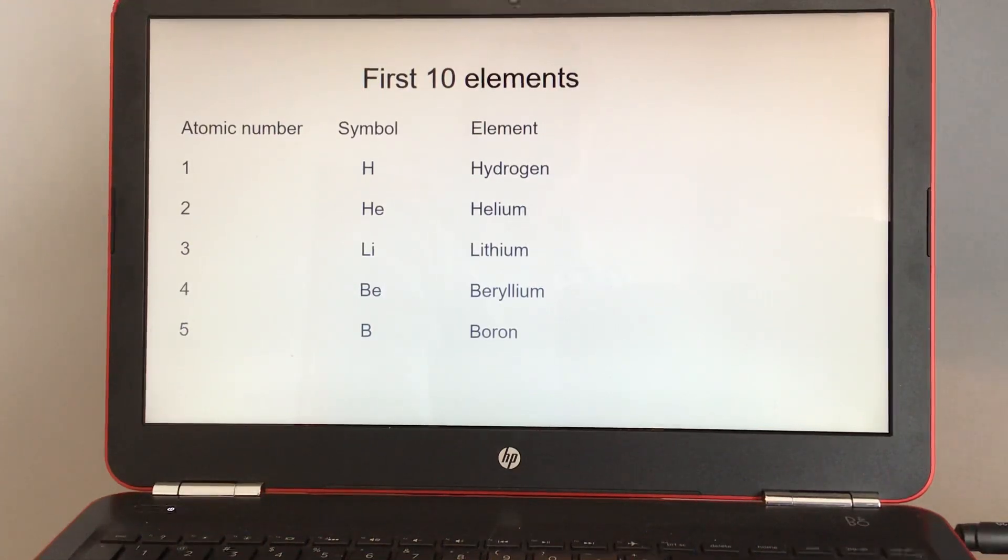Atomic number one is H for hydrogen, two is capital H little e for helium, atomic number three is capital L lowercase i for lithium, atomic number four is capital B lowercase e for beryllium, atomic number five is capital B for boron.